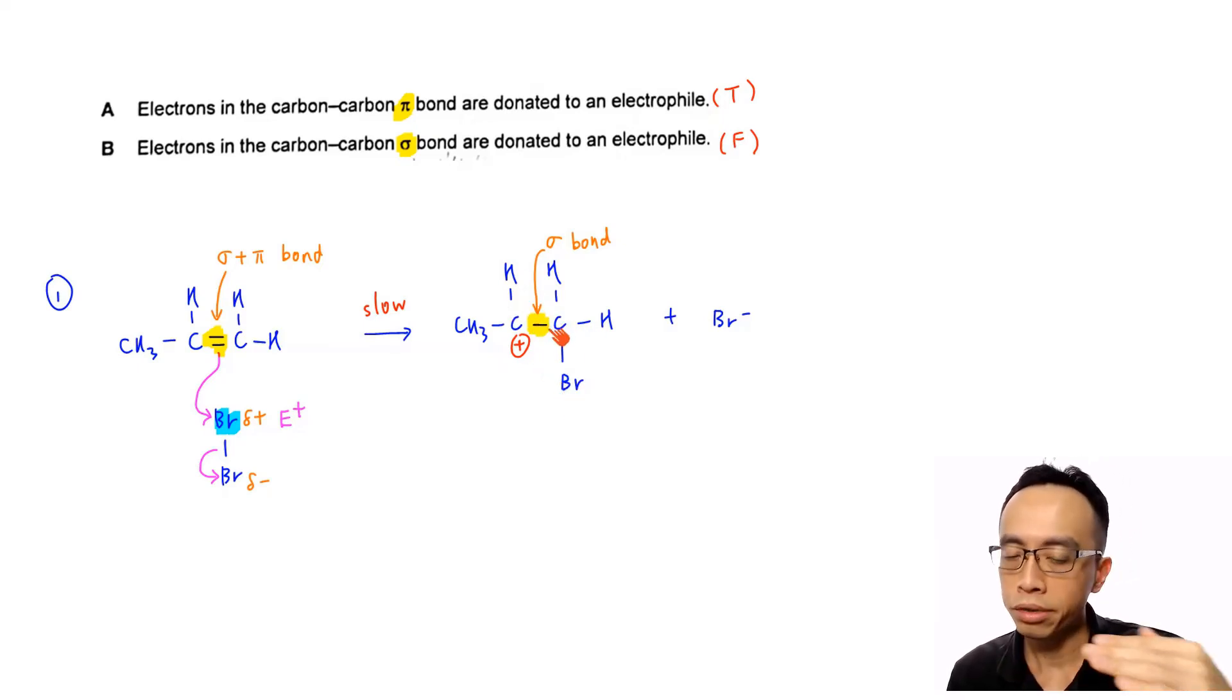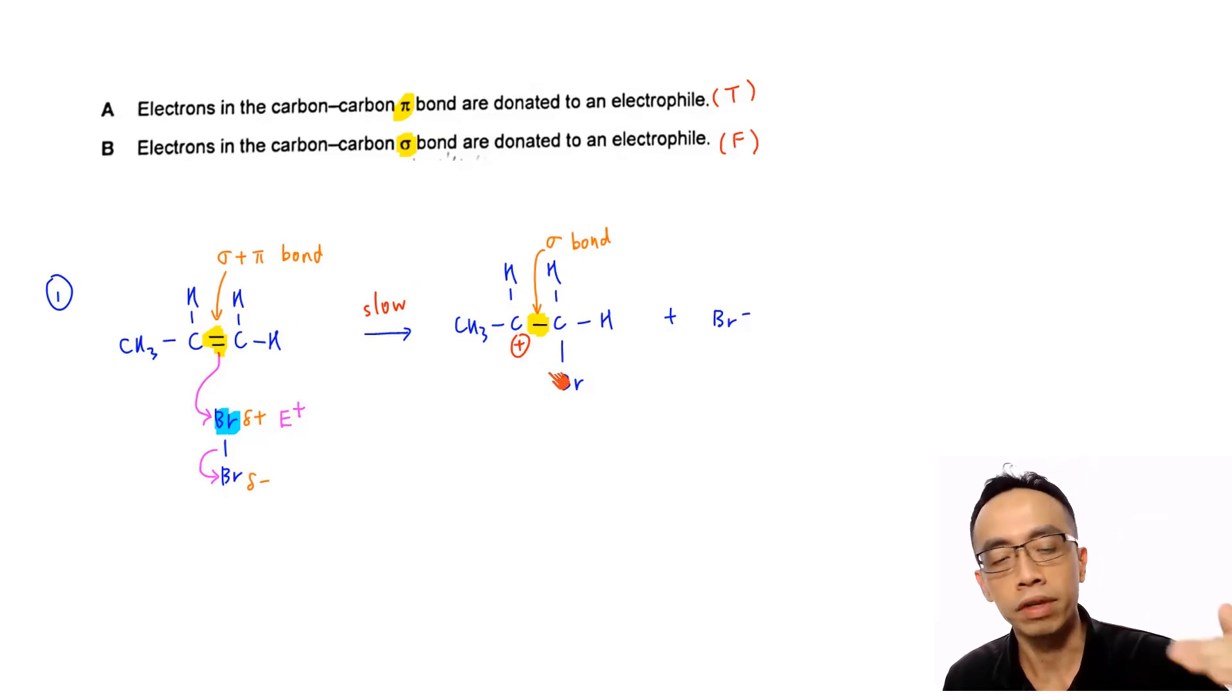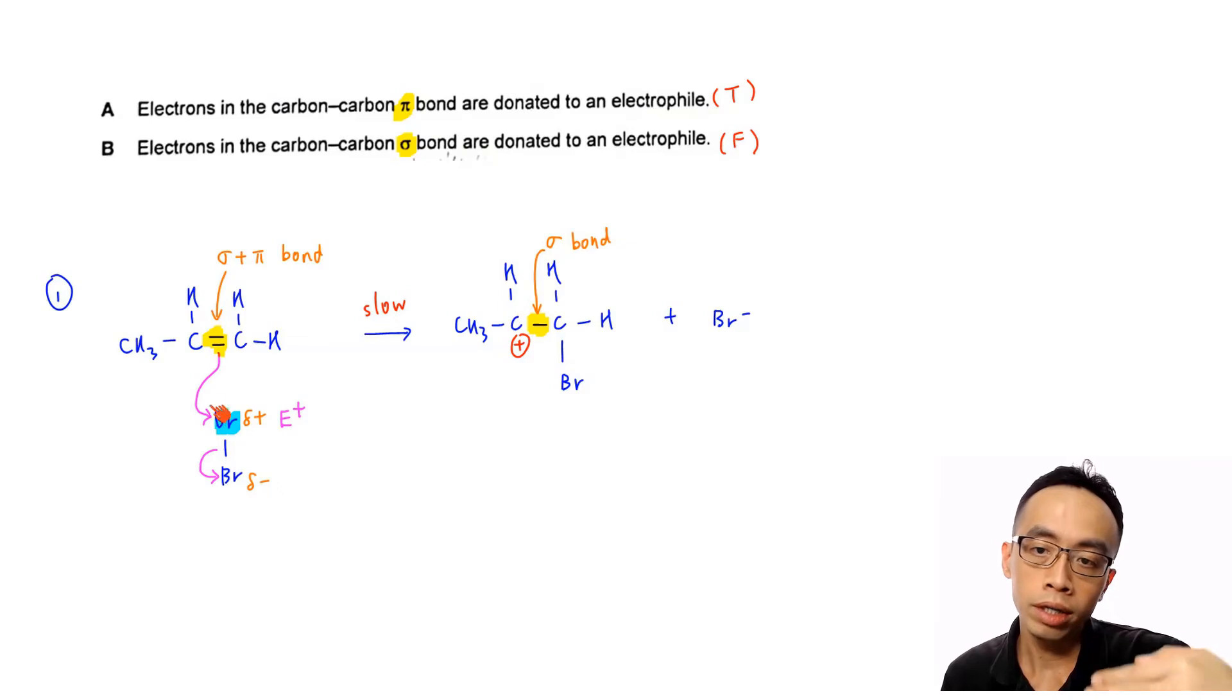Now what we do know is when we form the carbocation that is being formed, the carbon-carbon single bond is still there and this carbon-carbon single bond has to be a sigma bond. And if this is a sigma bond that is left, so this means then which bond that I'm using to attack your BR delta plus charge, my electrophile, has to be the pi bond. Because at the beginning this is sigma plus pi double bond, after that I'm left with a sigma bond. So the bond that is involved in donating to my electrophile should be our pi bond.